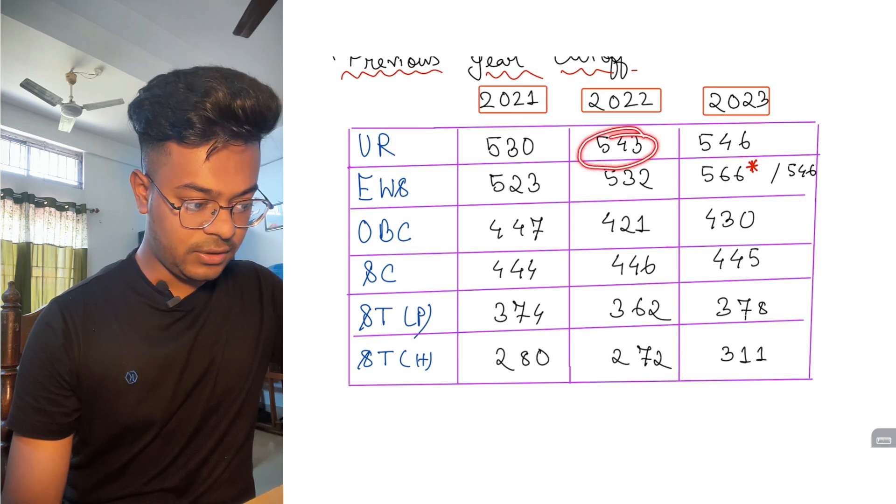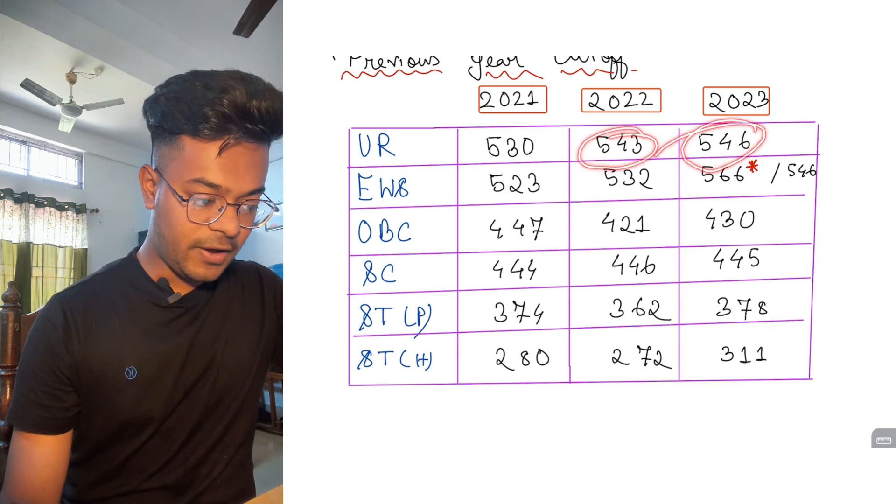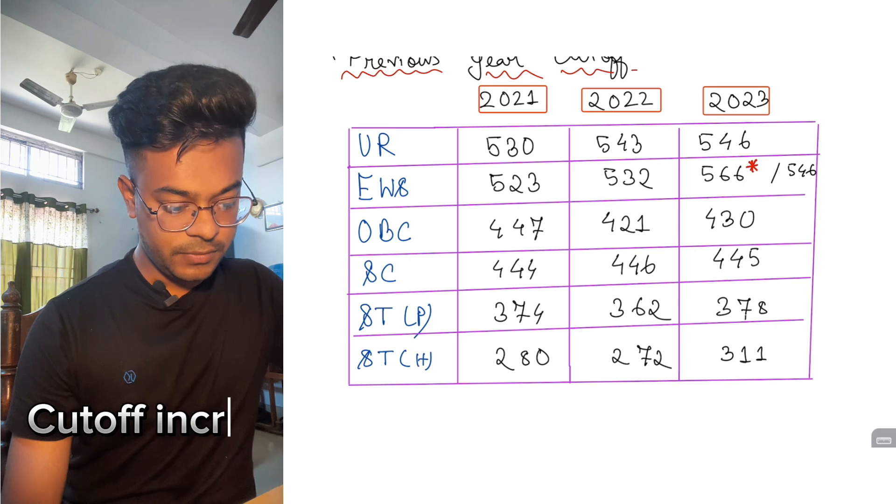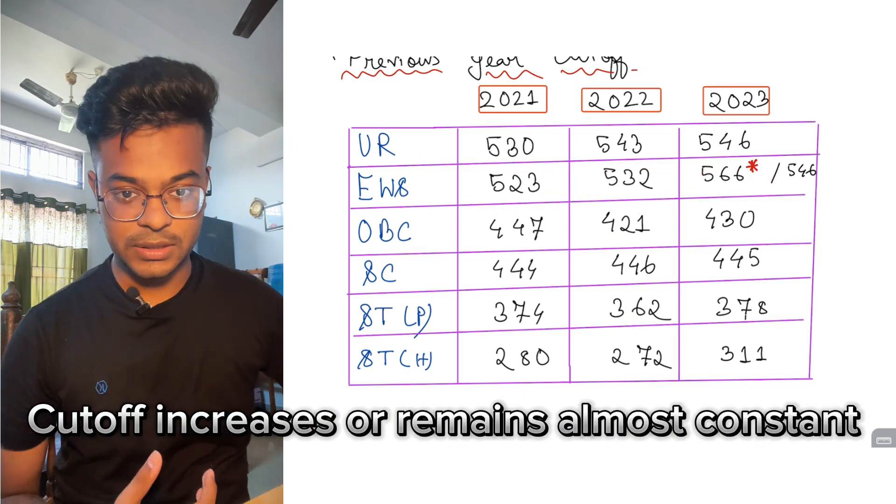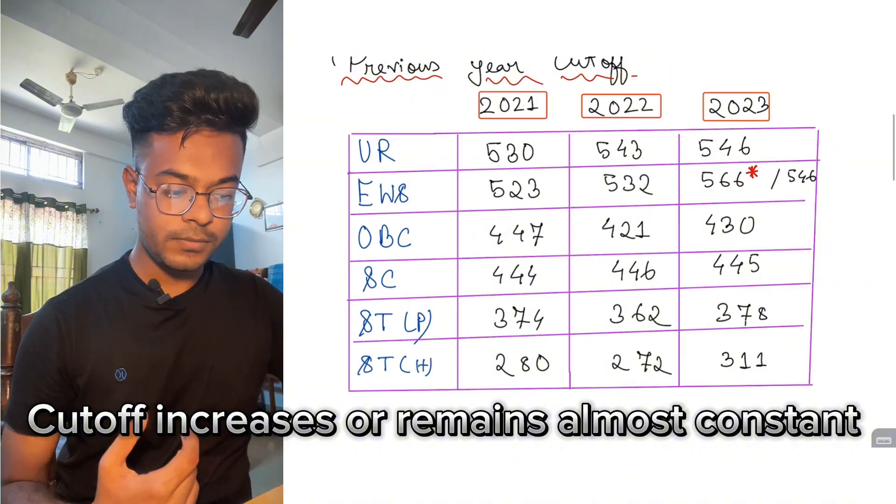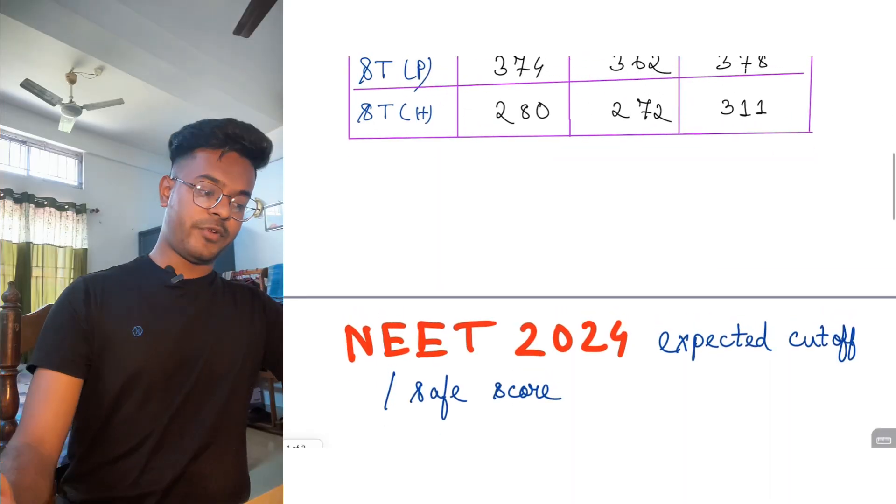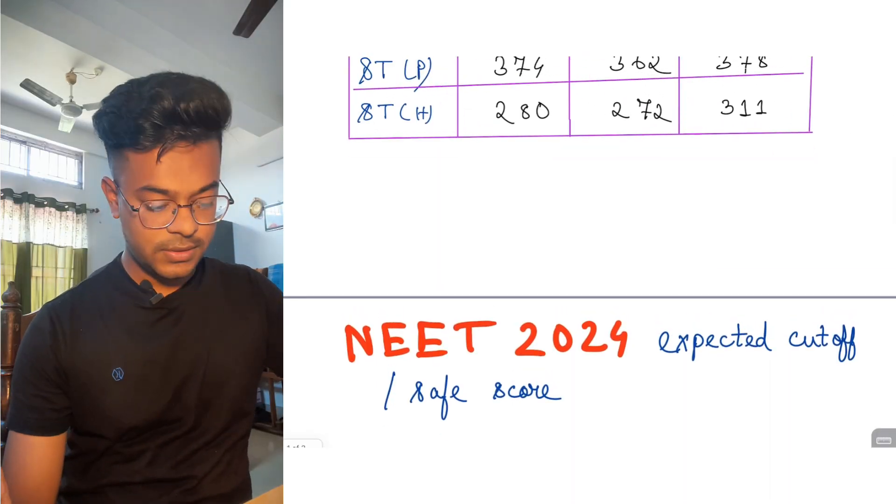2022 was 543, 2023 was 546. Cutoff in case you need to get selected in government is really almost cutoff doing this way.